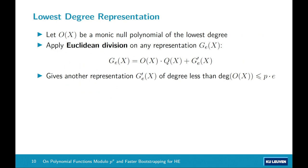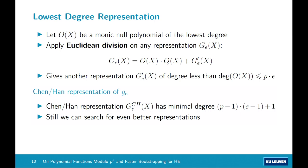For the lowest degree representation of polyfunctions: let O(x) be a monic null polynomial of lowest degree. Starting from any representation G_e of digit extraction, we apply Euclidean division by this monic null polynomial, giving a remainder G_e' that represents the same function but always has degree less than p·e — so p·e is really an upper bound on the degree of polynomials we should expect. Going back to the Chen-Han representation, it turns out their polynomial already has minimal degree, but we can still search for better representations in terms of scalar and non-scalar multiplications.